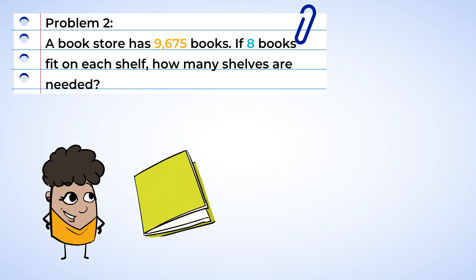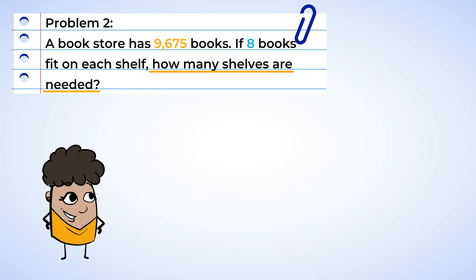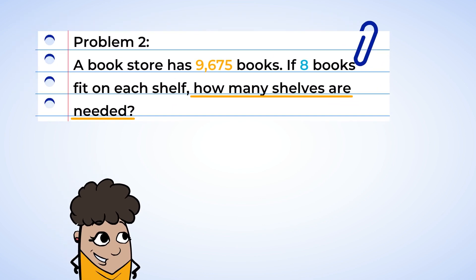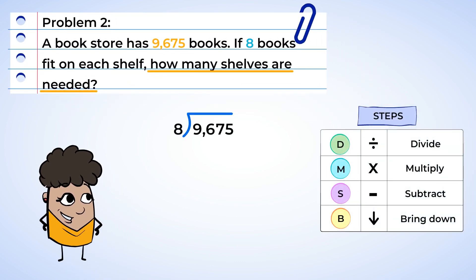A bookstore has 9,675 books. That's a lot of books. If 8 books fit on each shelf, how many shelves are needed? That is a mighty, mighty big number here. But there's no time to waste. And I have a suspicion there's going to be a remainder in this one. What do you think? Let's divide step by step, starting from left to right.